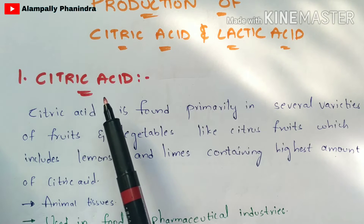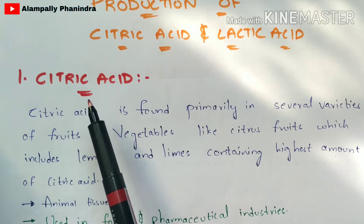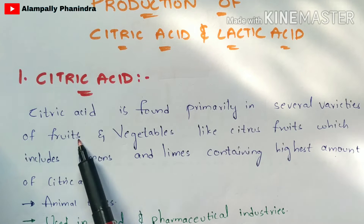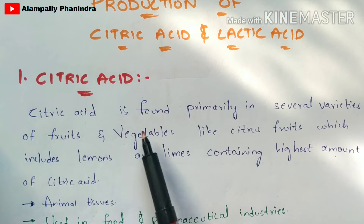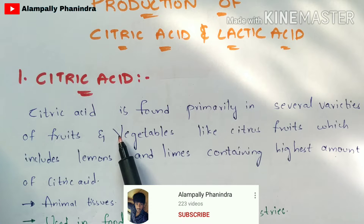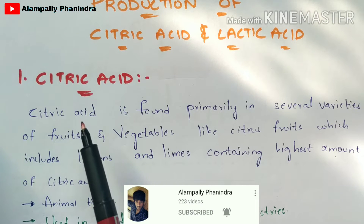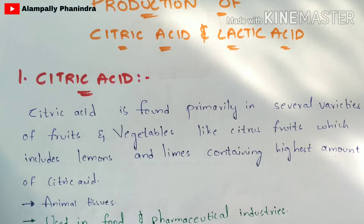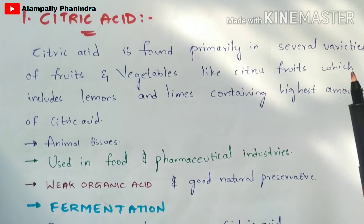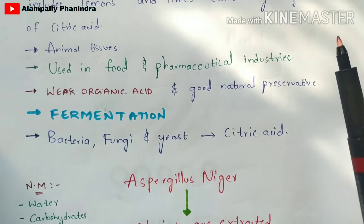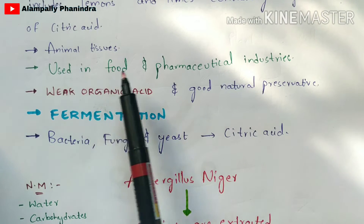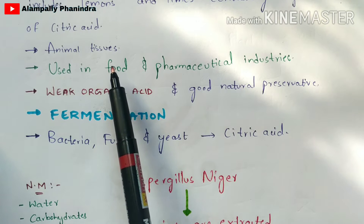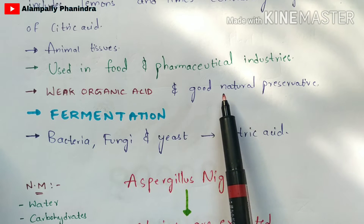Before entering into the production of citric acid, let us see the introduction — the definition of citric acid, what it means, and what are its uses. Citric acid is found primarily in several varieties of fruits and vegetables, like lemons and limes. The taste of citric acid is very pulpy, and lemons contain the highest amount of citric acid. Citric acid plays a major and vital role in increasing your immune power and is also found in animal tissues. It can be used in food and pharmaceutical industries, where it mainly acts as a good natural preservative.